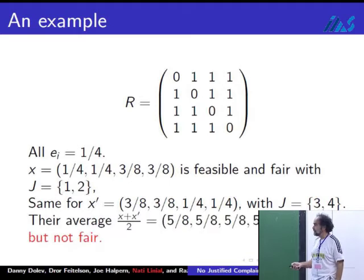Let's average these two solutions. You get five-sixteenths, five-sixteenths, and so on. This is a feasible solution, but it's not fair. This is really, in some way, not a very good example because, as everyone will see immediately, the right thing to do here is give everyone a third.